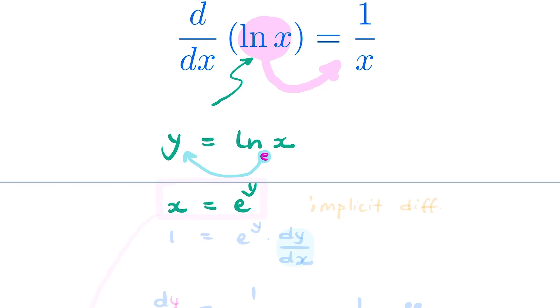Now we can differentiate both sides of this equation using implicit differentiation. The derivative of x is simply 1, and the derivative of y is e to the y times dy over dx.